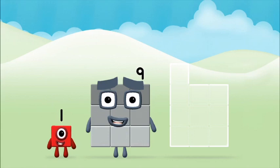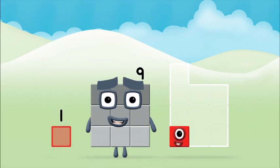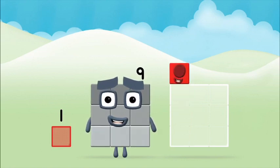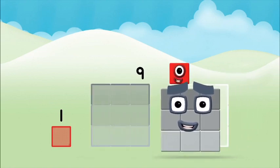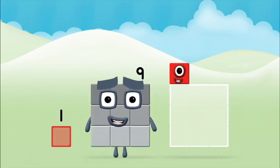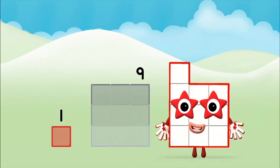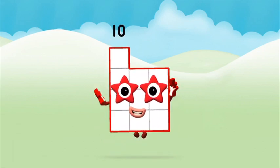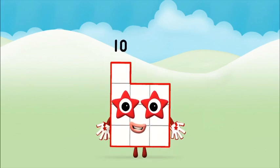Now add the number blocks together. One, nine. One plus nine equals ten. That's it! You made number block ten!